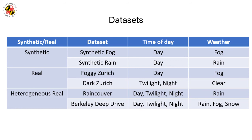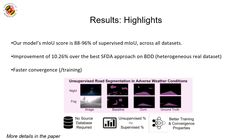We use the Cityscapes dataset as the clear weather source domain. We conduct evaluation experiments on six datasets captured in adverse environmental conditions such as rain, snow, fog, and varying time of day. Our main results show that the self-attention autoencoder is comparable to more complex and sophisticated architectures for road segmentation. We empirically show that our method approximates supervised learning-based methods across all six datasets. We demonstrate an improvement of at least 10.06 percent over prior work in SFDA, and we improve training time over prior SFDA approaches by 18 to 180 times.